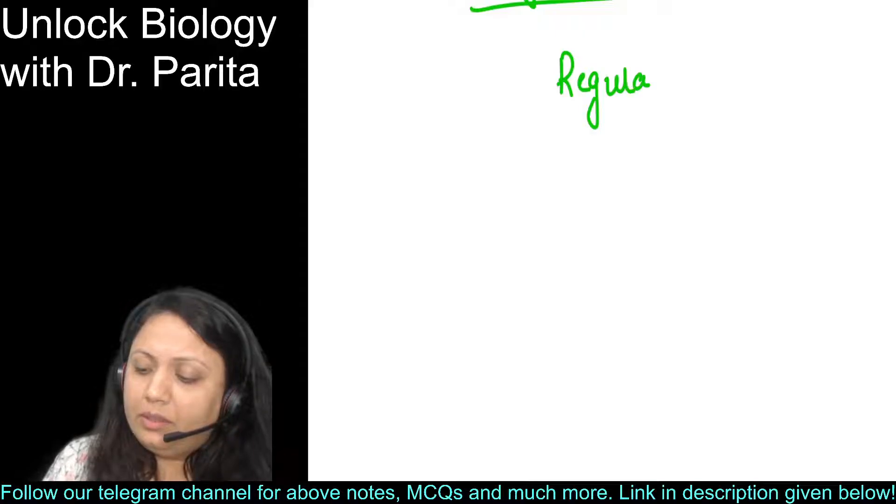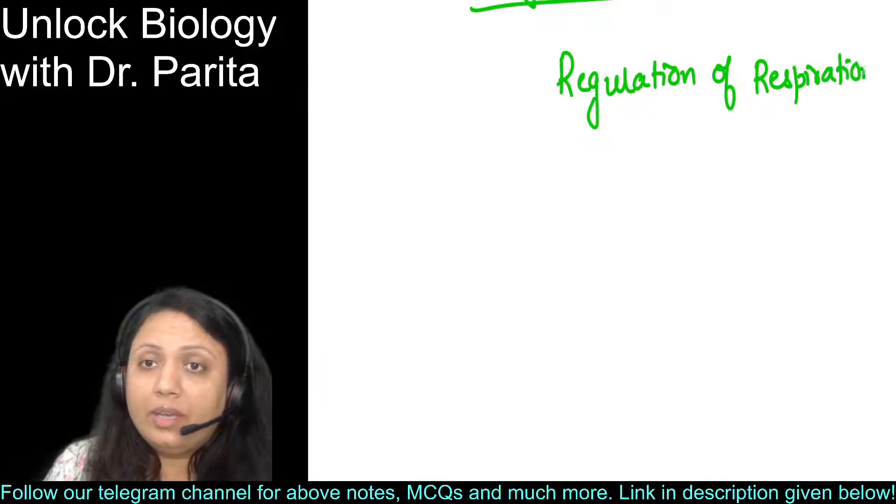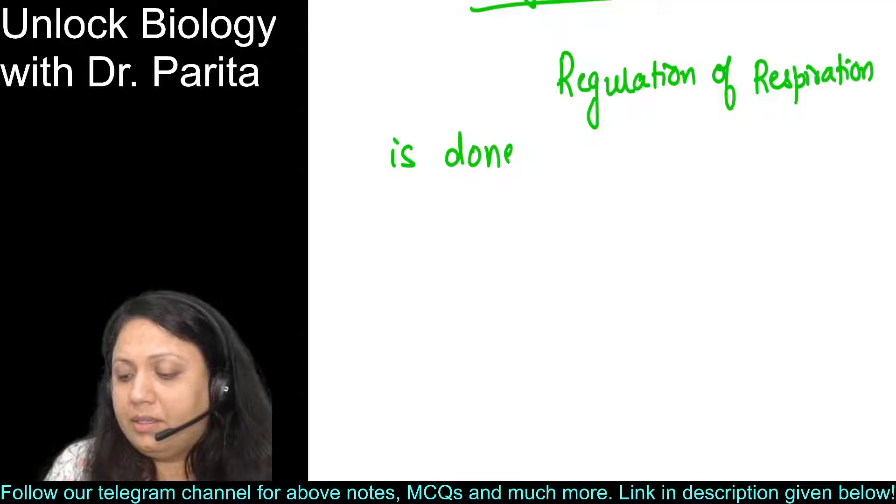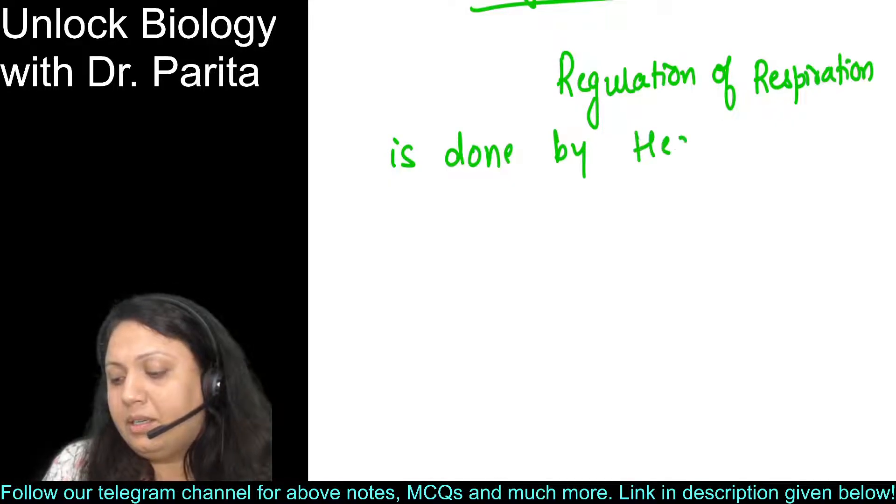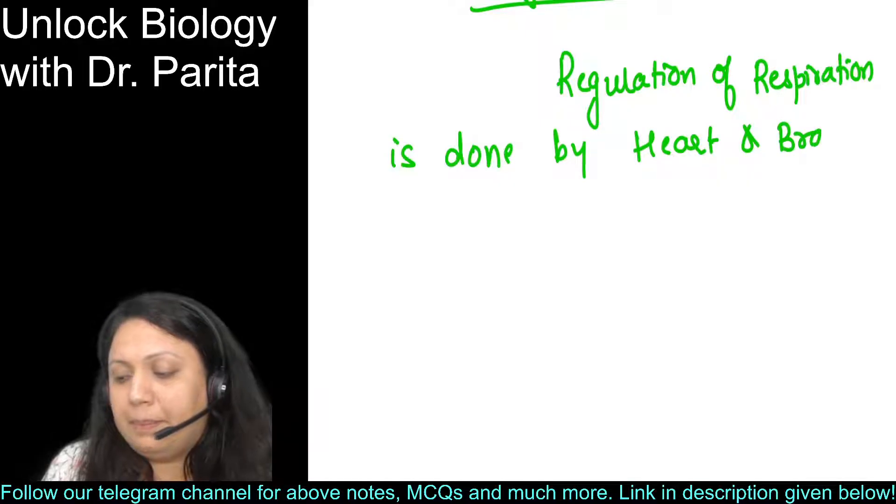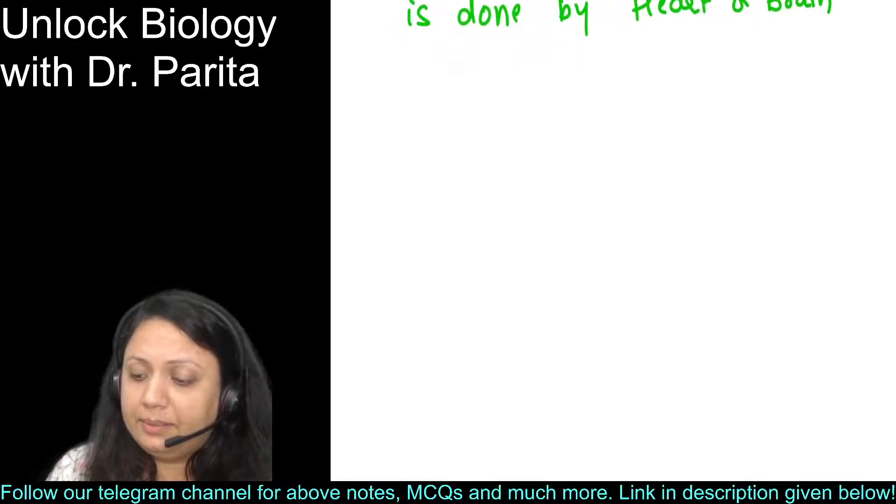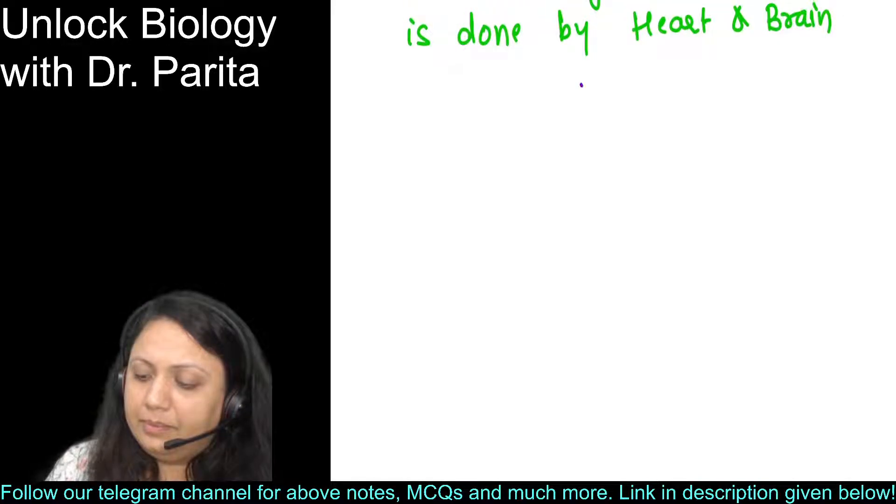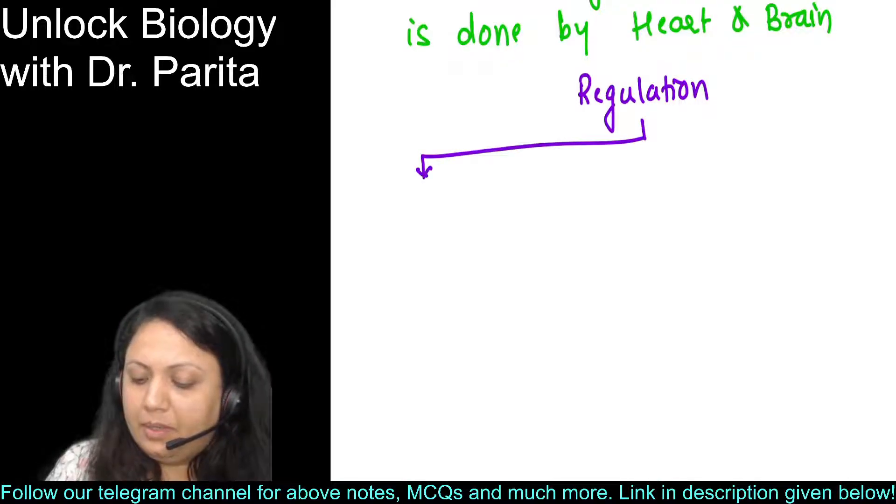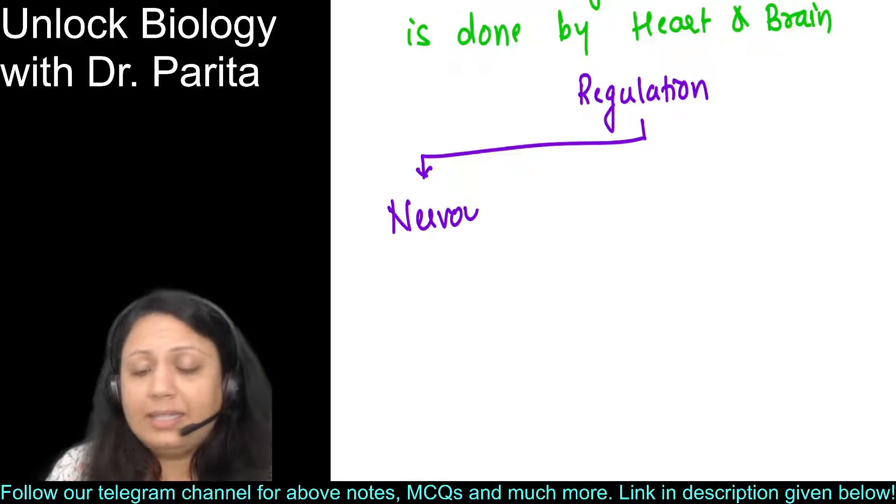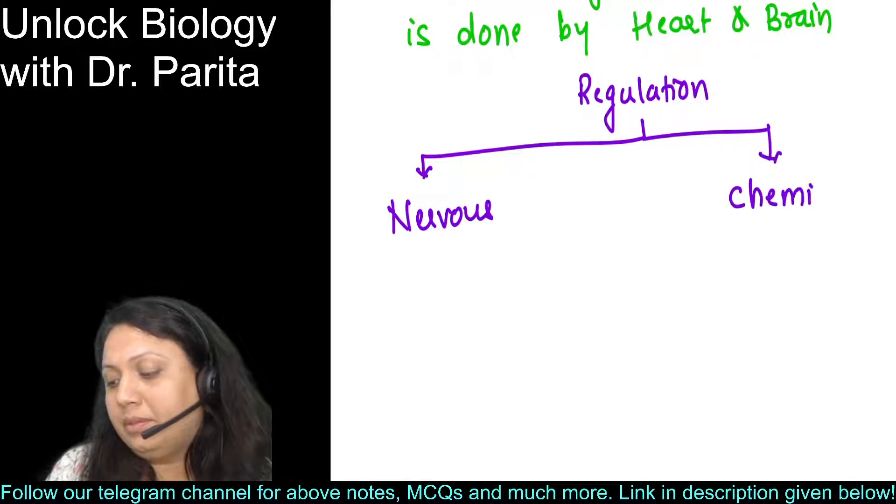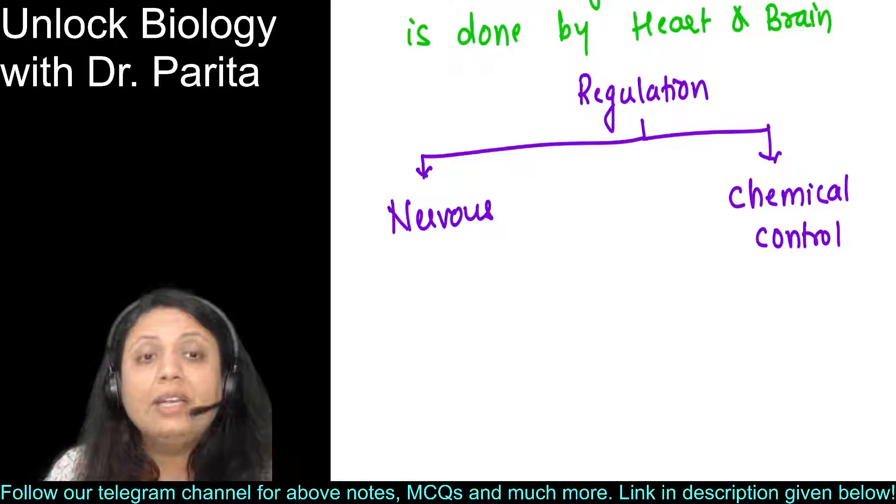Regulation of respiration is done by heart and brain. We are going to divide this particular chart into nervous control and chemical control.